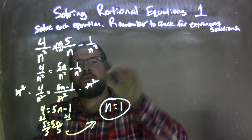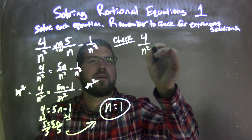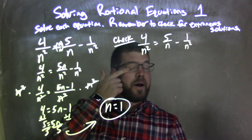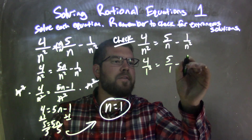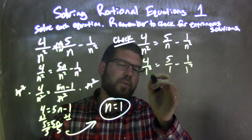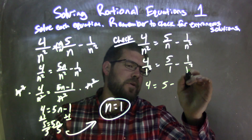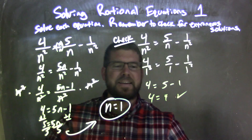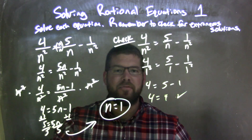So now if I have n equals 1, I need to check that. I'm going to rewrite my equation: 4 over n squared is equal to 5 over n minus 1 over n squared. If n is 1, I can quickly plug it in: 4 over 1 squared equals 5 over 1 minus 1 over 1 squared. 4 over 1 squared — 1 squared is 1 — so that's 4. 5 over 1 is 5, minus 1 over 1 squared is 1. So 5 minus 1 is 4. Fantastic — left and right hand sides are equal. Confirming n equals 1 is my final answer.